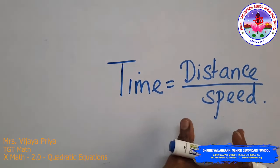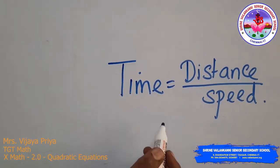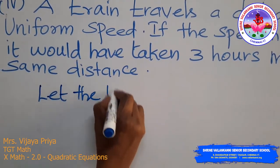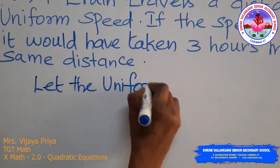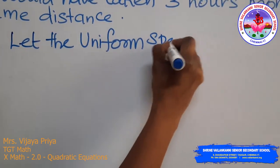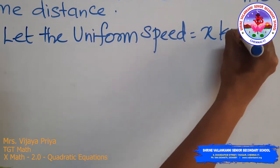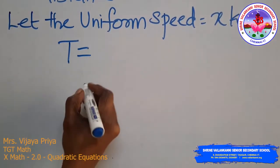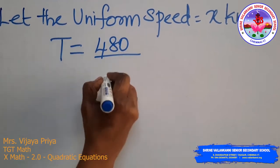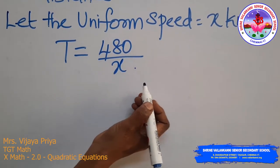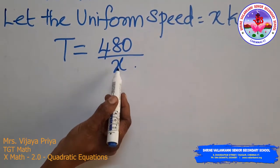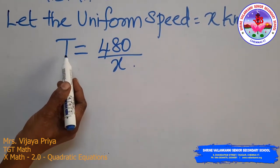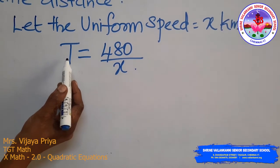We use the concept: time = distance ÷ speed. Let the uniform speed be x km/h. Then time taken T = 480/x. If speed is reduced by 8 km/h, the new time would be 3 hours more than the original time.